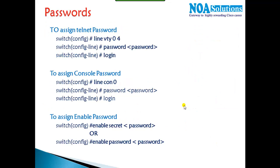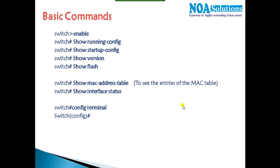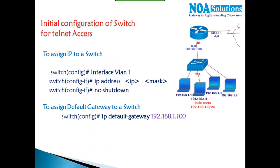These are the basic configurations we need to know. All the commands are similar to what we used for basic router configuration. The only addition is assigning an IP address on the switch for telnet access, which is not strictly required but in production networks all switches are assigned IP addresses so they can be accessed remotely via telnet.